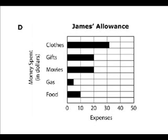Okay, this is D. In this graph it shows that clothes is $32, gifts is $20, movies is $20, gas is around $65, and food is $10. So you know that's definitely wrong, so we can immediately eliminate that.